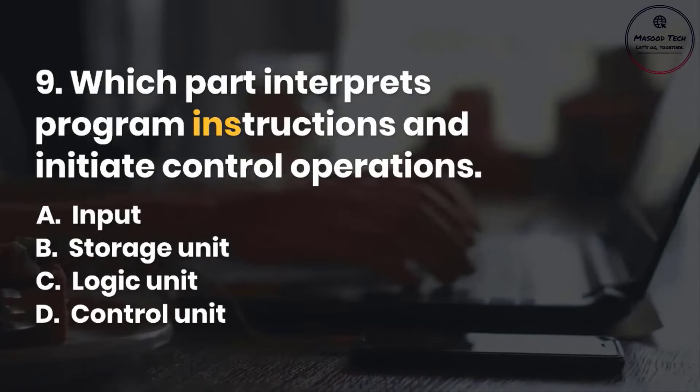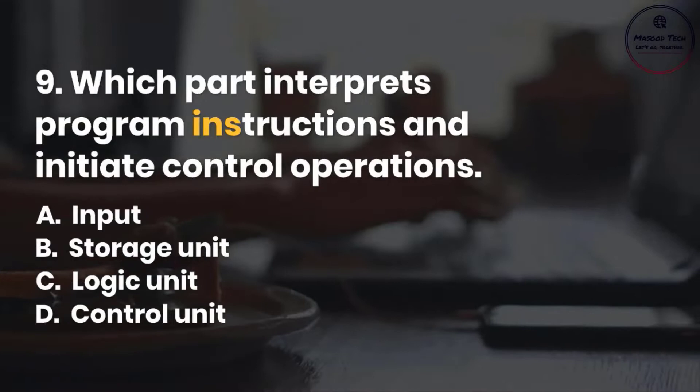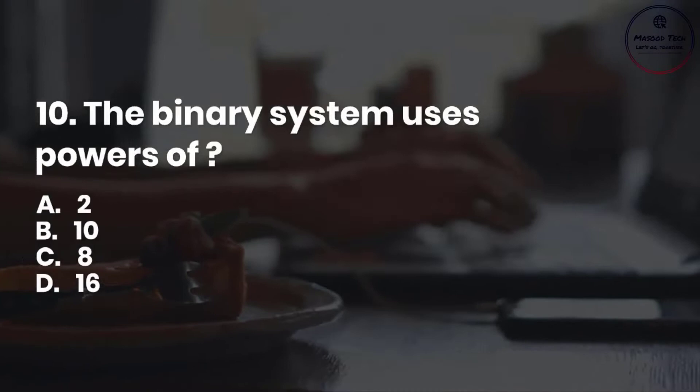Number 10. The binary system uses powers of: A. 2. B. 10. C. 8. D. 16. Correct answer is A.